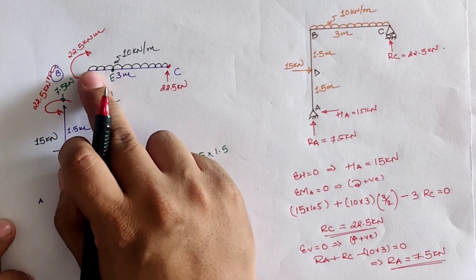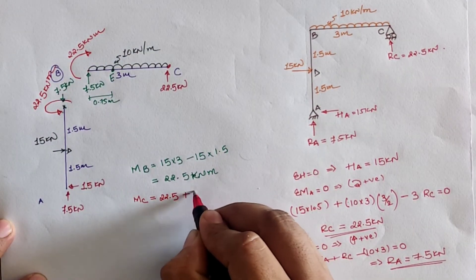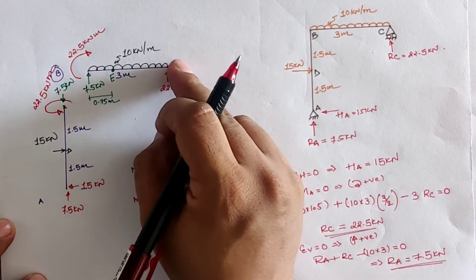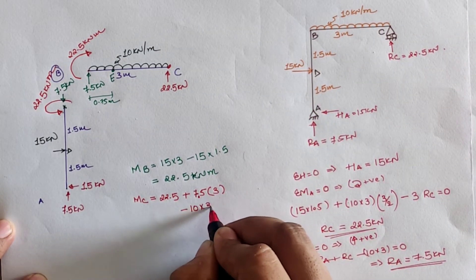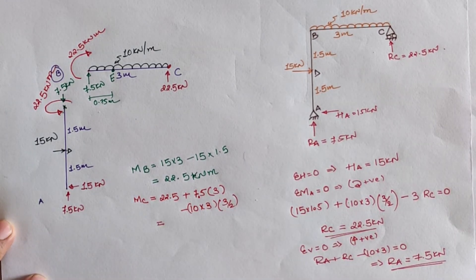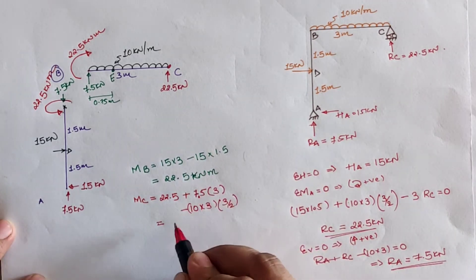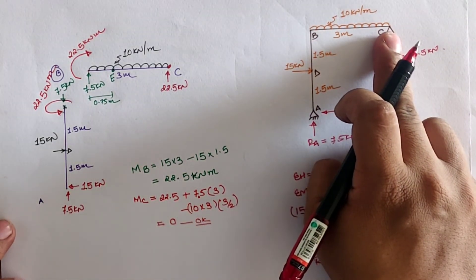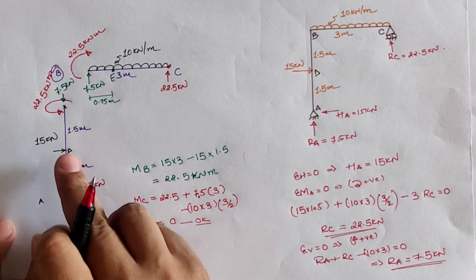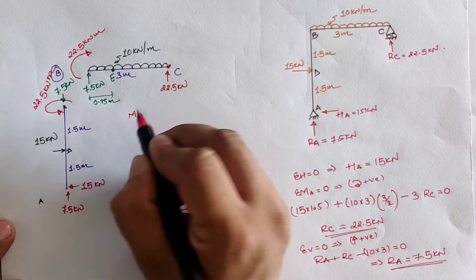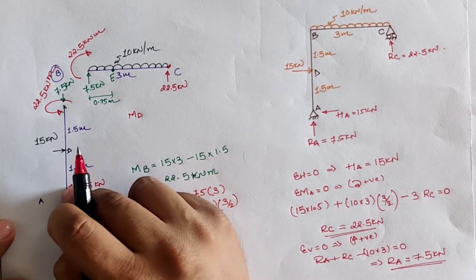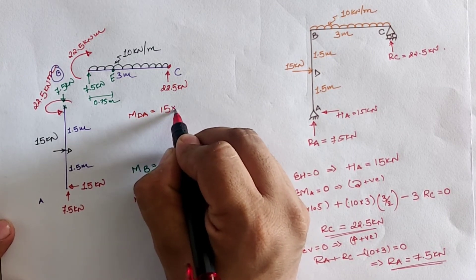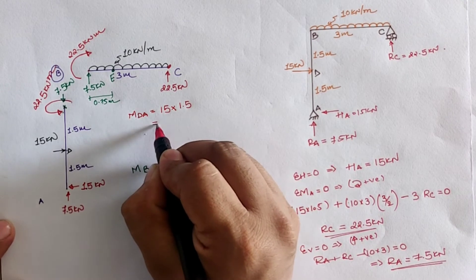Taking moment at C: clockwise 22.5 kN·m at B, plus 7.5 × 3 (clockwise from RA), minus 10 × 3 × 3/2 (anticlockwise UDL) = 22.5 + 22.5 − 45 = 0 kilonewton·meter. This confirms our answer since moment at roller support C must be zero. At location D, moment = 15 × 1.5 = 22.5 kN·m, which is positive, so an anticlockwise moment of 22.5 kN·m is applied at D in the direction of A.